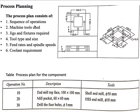The process plan consists of the sequence of operations, machine tool used, jigs and fixtures required, tool types and size, feed rate and spindle speeds, and coolant requirements. For example, for operation number 10, end mill tab of phase 10 by 10 mm and a shell end mill of diameter 50 mm — this is a typical process plan for a component.